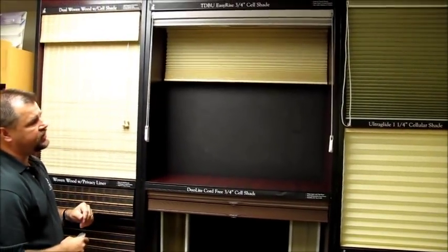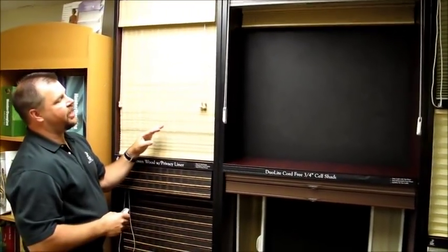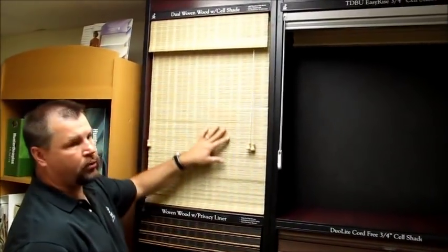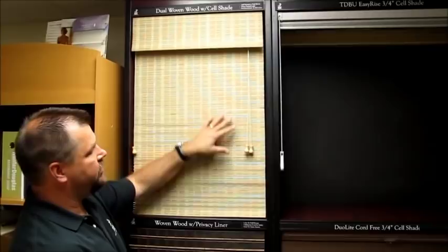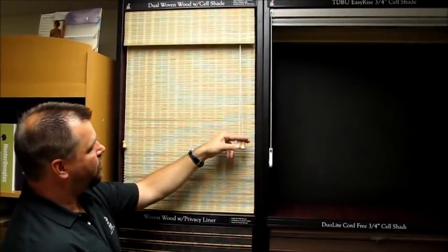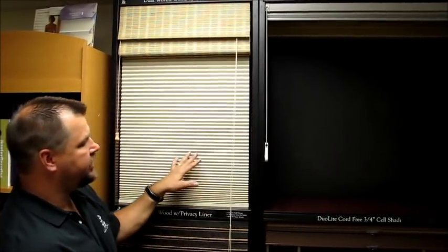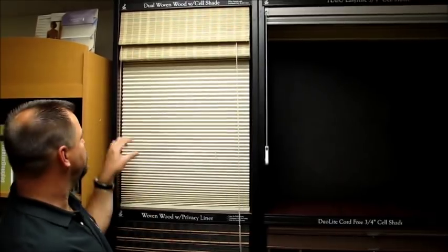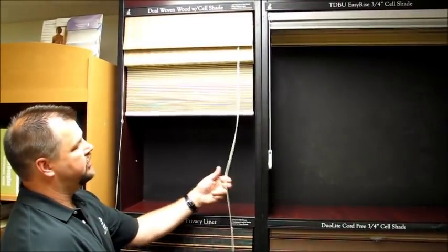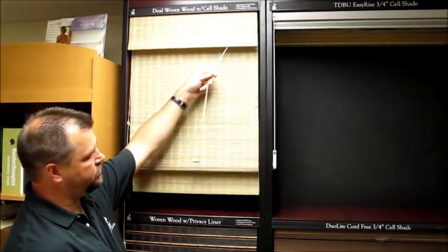The versatility of the cell shade is a great option to have. Some people aren't as impressed with its aesthetics, but you can have a Roman shade, which is a very beautiful aesthetic product. This particular one is a woven wood, which is transparent. You can see through it. But what we've done is we've attached a micropleat cellular shade behind it. This allows you to control your light and your privacy behind your woven wood Roman shade.